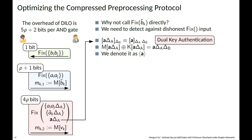Now let's optimize this protocol, beginning with the preprocessing phase. We list all communication linearly scaling with the number of AND gates in DILO preprocessing. Notice that in the red box, four ρ bits are spent to authenticate the bk-delta values. This is counterintuitive because we can do this by calling the FIX command, which only takes one bit per AND gate. The problem is Bob may use inconsistent inputs, and we need to check for this inconsistency.